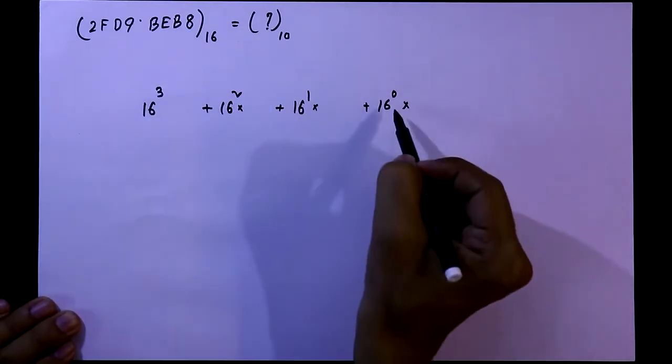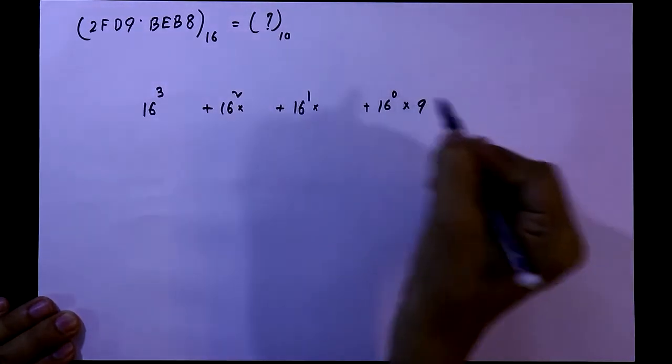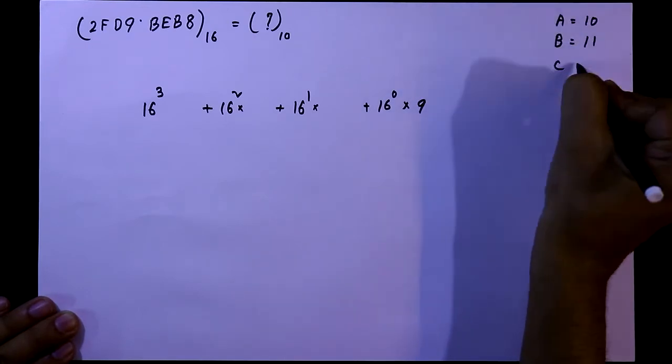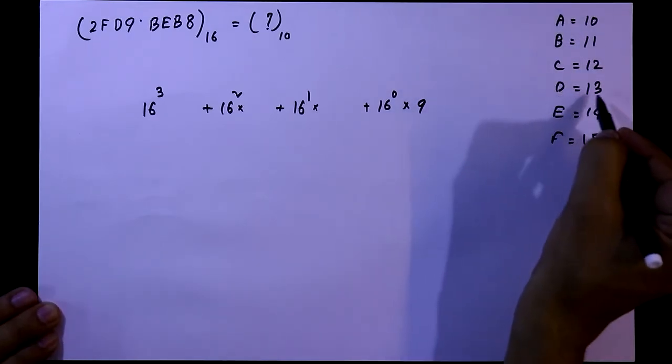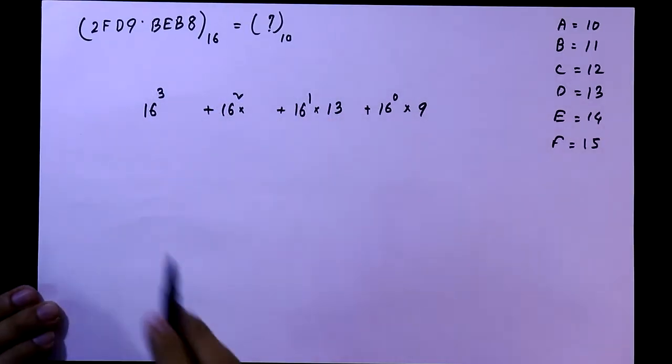Now, with the 16 to the power 0, we have to multiply this with 9. Then it is D, as we know D means 13, so we have to multiply this with 13.